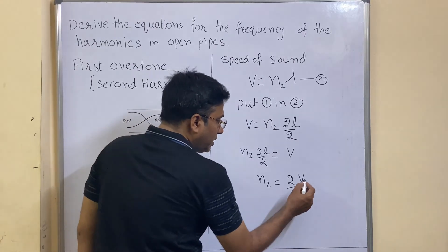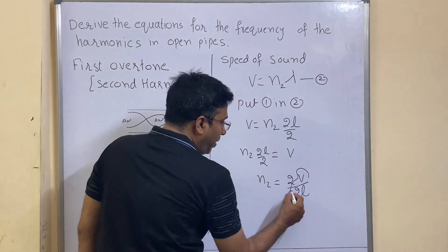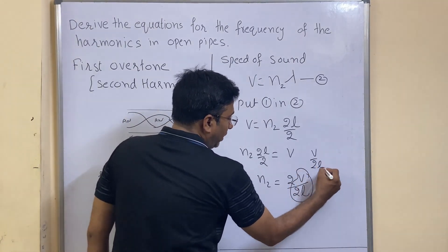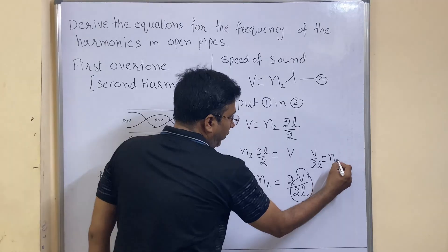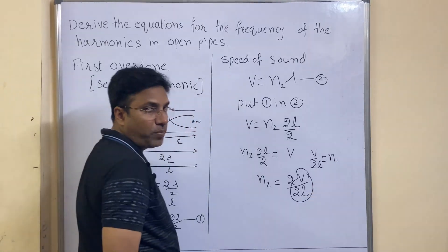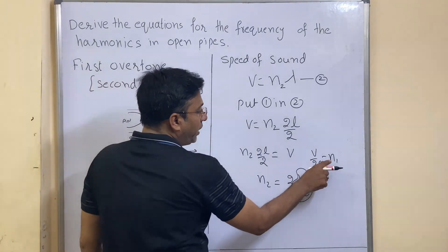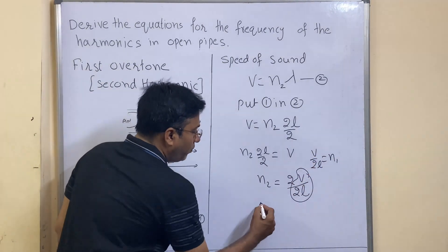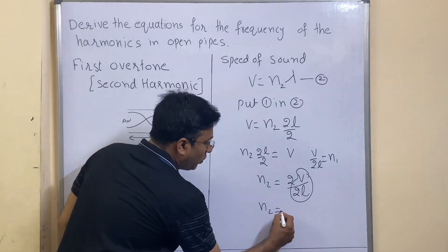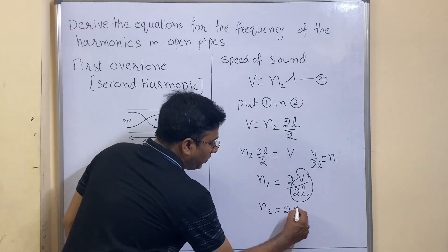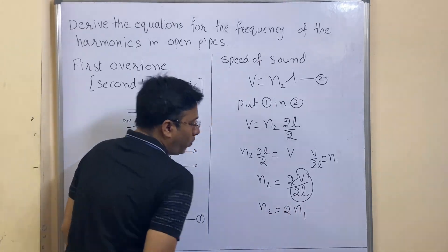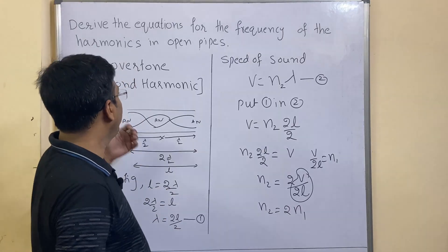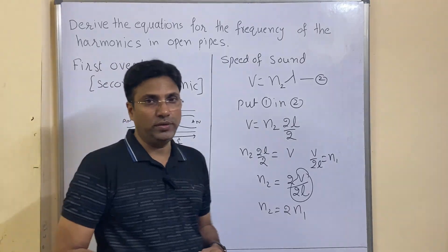Here, V by 2L is nothing but n1, which we derived just before. So in place of V by 2L we can write n1, therefore n2 is equal to 2n1. This is the equation for the first overtone.